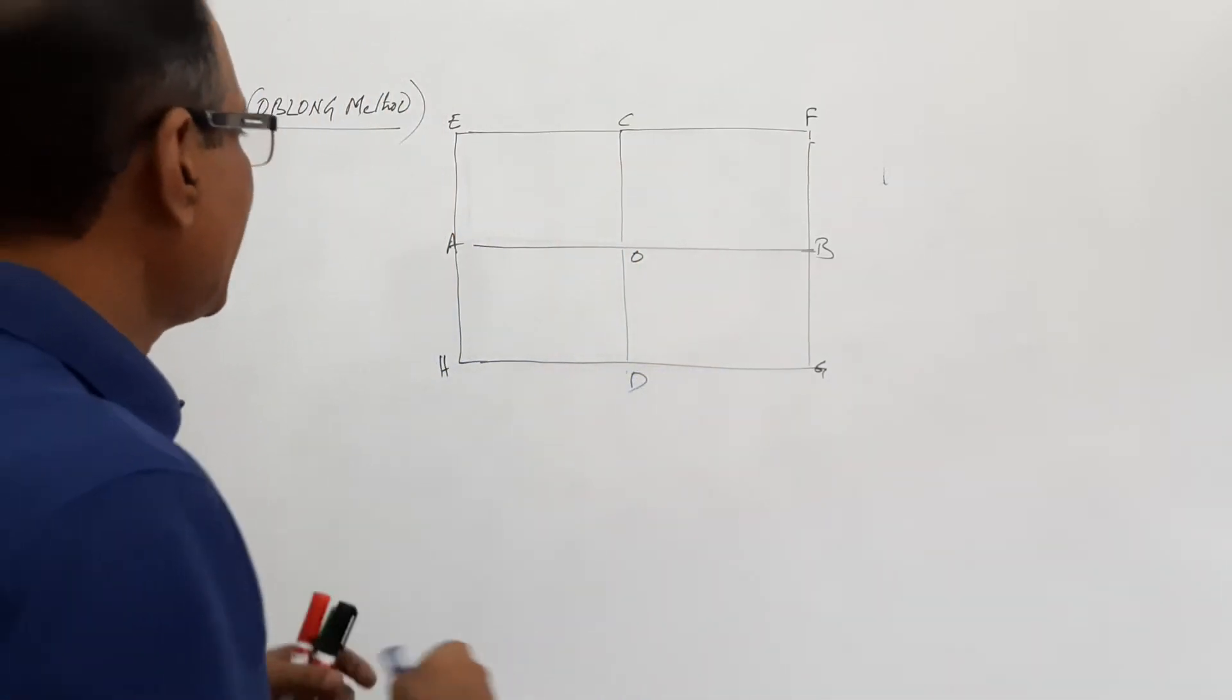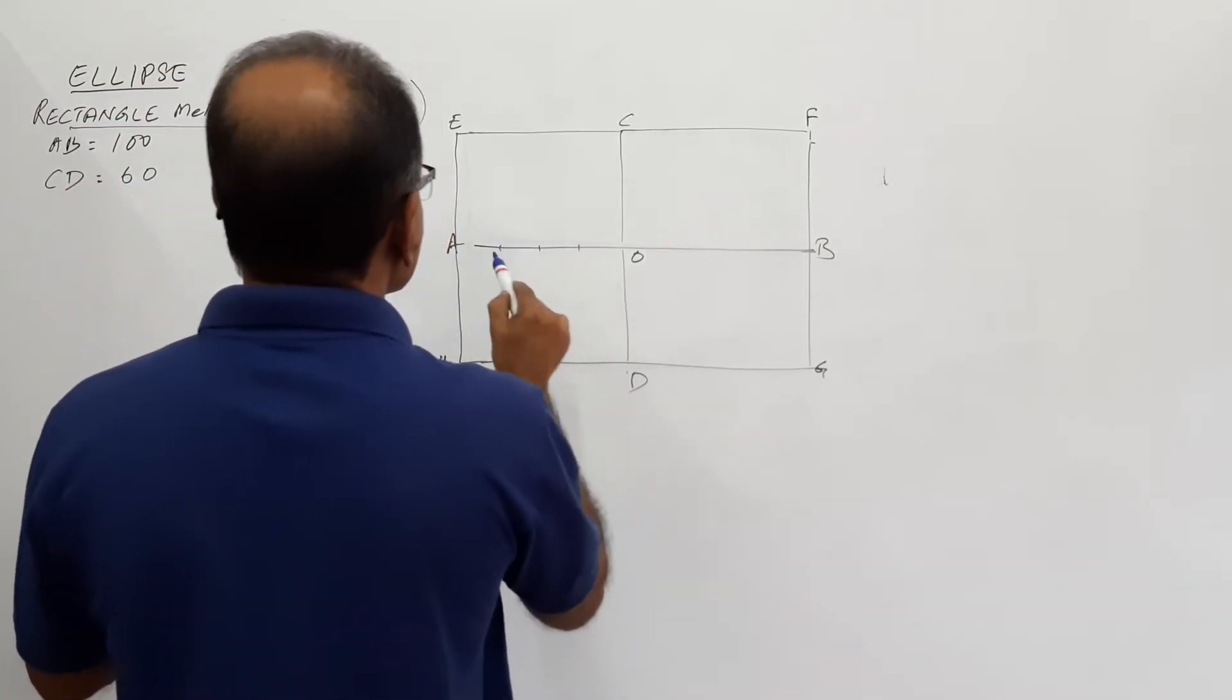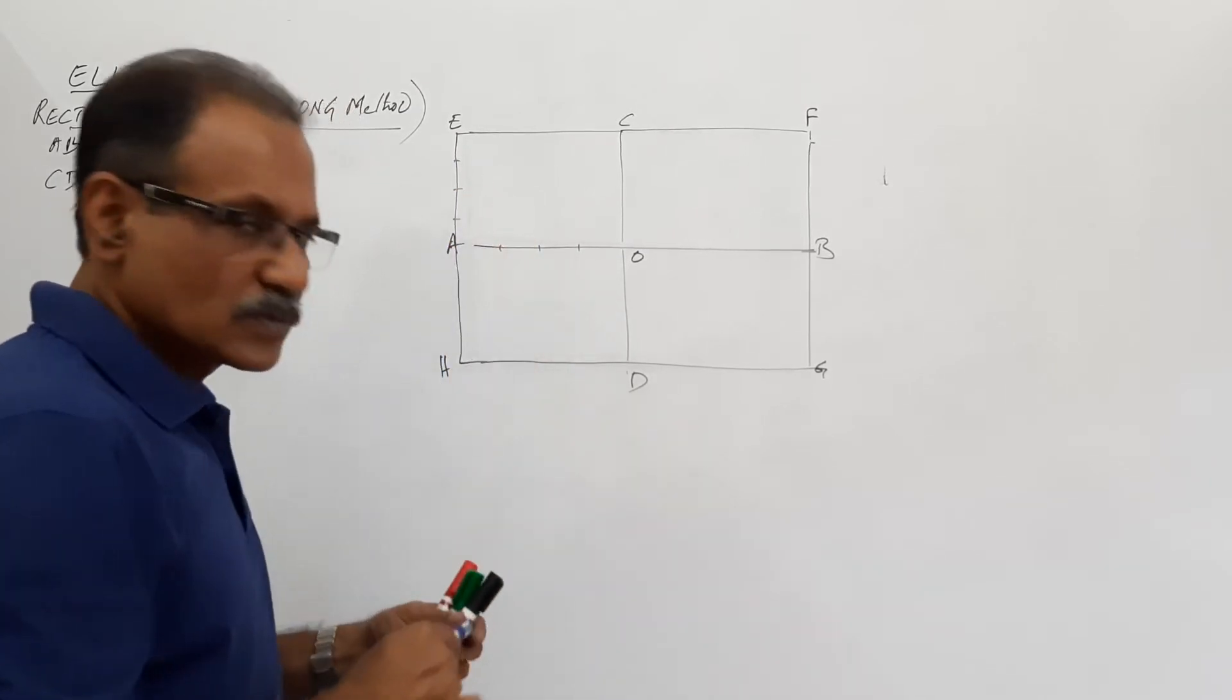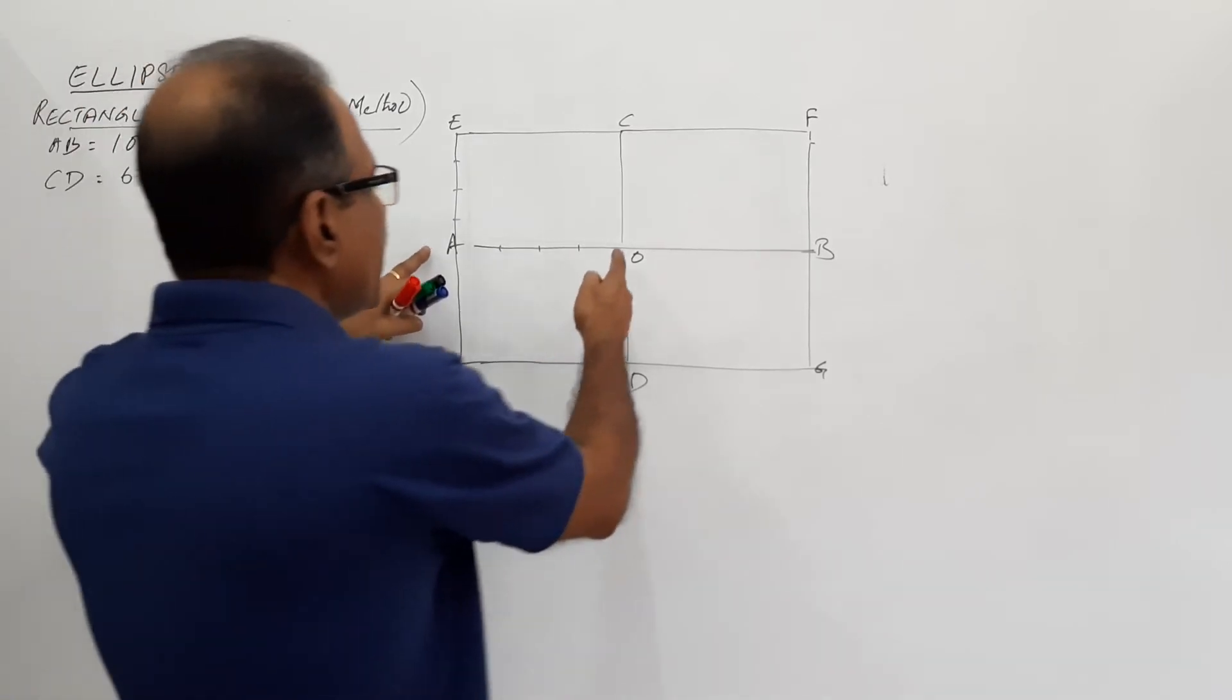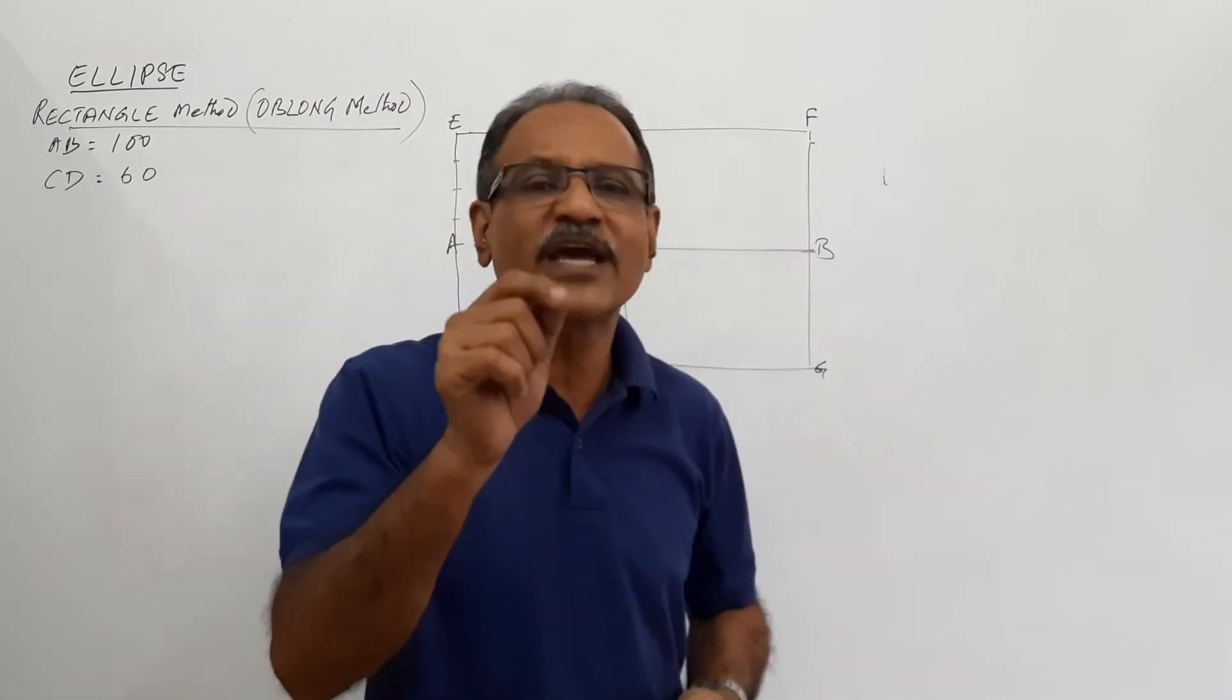Now, I divide AO into, say, 4 equal parts. And then I divide AE also into 4 equal parts. Now, in this particular case, how much is AO? AO is 100 by 2 is equal to 50.